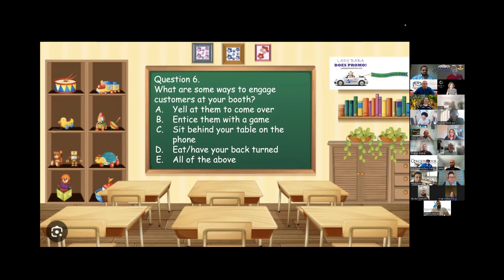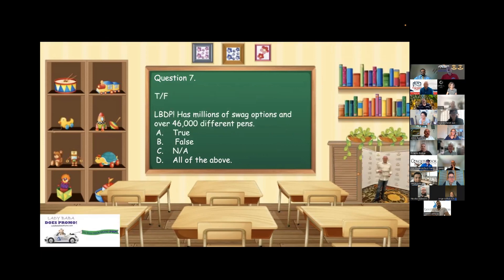Yaminia, question six. What are some ways to engage customers at your booth? A, yell at them to come over. B, entice them with a game. C, sit behind your table on the phone. D, eat and have your back turned or E, all of the above. I'm yelling at people. So, yeah. But I liked entice them with a game also. B, correct. Yaminia, you must have gone to public school down in Sierra Vista.